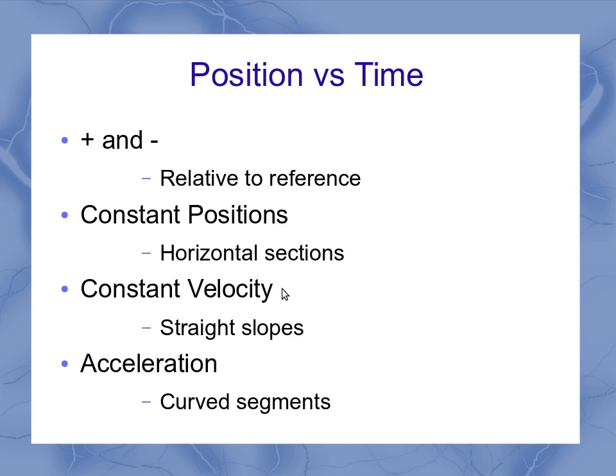If you've got constant velocity, that's a straight slope with an upward slope being positive velocities, a downward slope being negative velocities. And if you've got curved segments, that means you do have an acceleration.